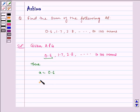d equals the common difference, so 1.7 minus 0.6, which equals 1.1, and n equals 100.